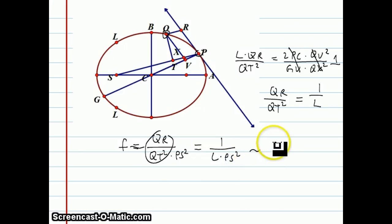Which is, L is a constant, so it's 1 over PS squared. And that's the inverse square law.